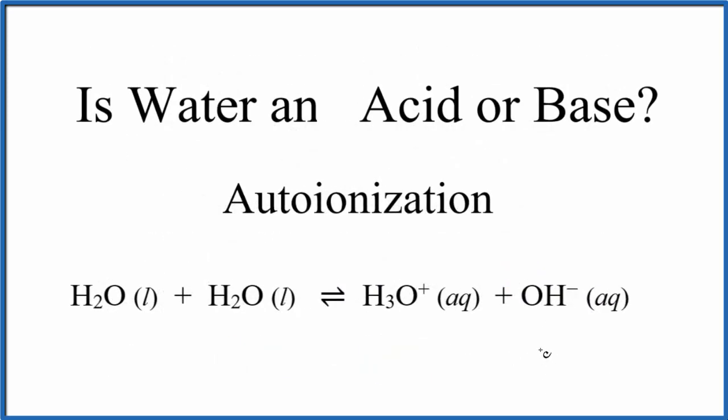One thing you should be aware of: water does undergo a process called autoionization. If you had that pure water with a pH of 7 that's neutral, a very small number of the water molecules will be in equilibrium where we have the H2O molecules.